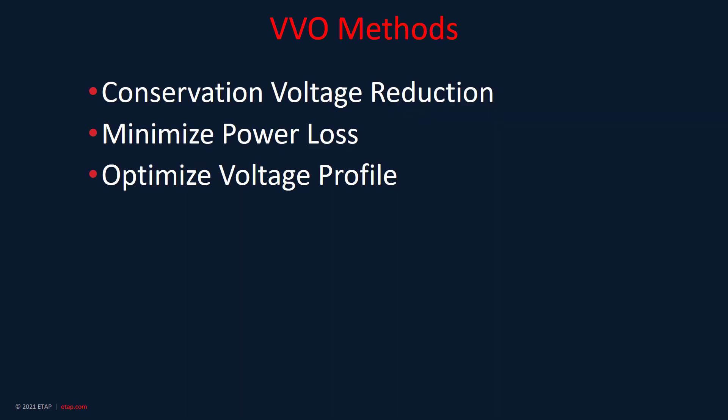Volt-VAR Optimization includes Conservation Voltage Reduction, or CVR, functions that are used to calculate and maintain acceptable voltage — for example, 120 volts plus or minus 5 percent — at the service entrance of all customers served by the feeder under all possible operating conditions. CVR is used to flatten voltage profiles and lower overall system voltage while staying within specified ANSI or IEC voltage limits.